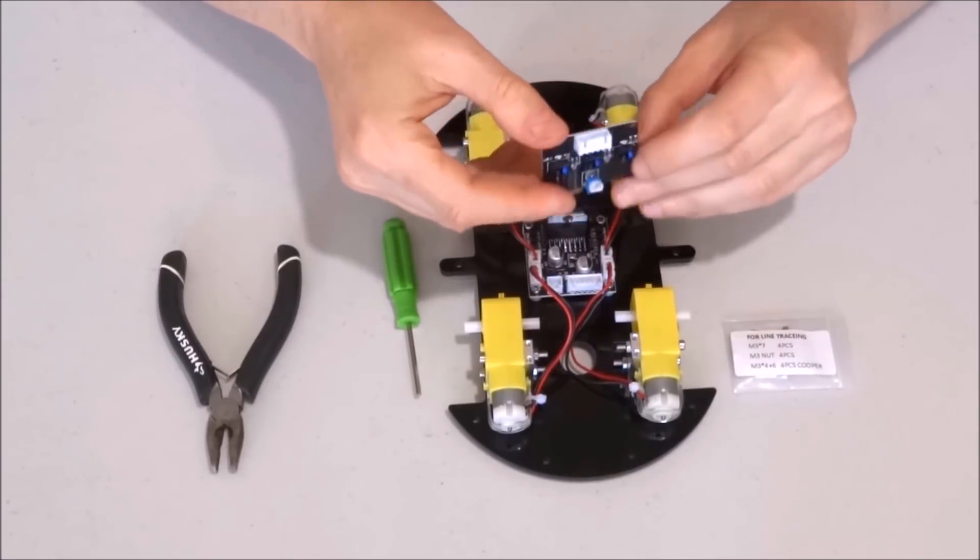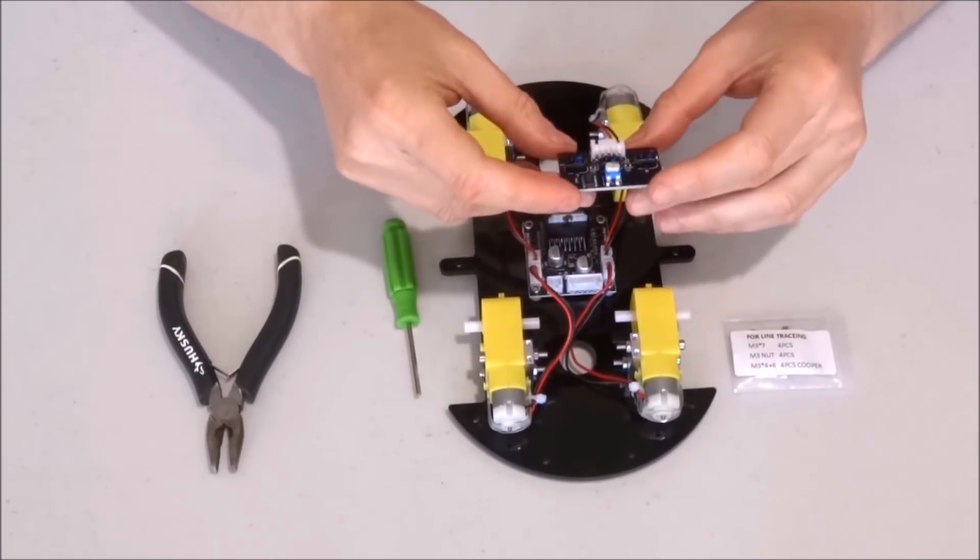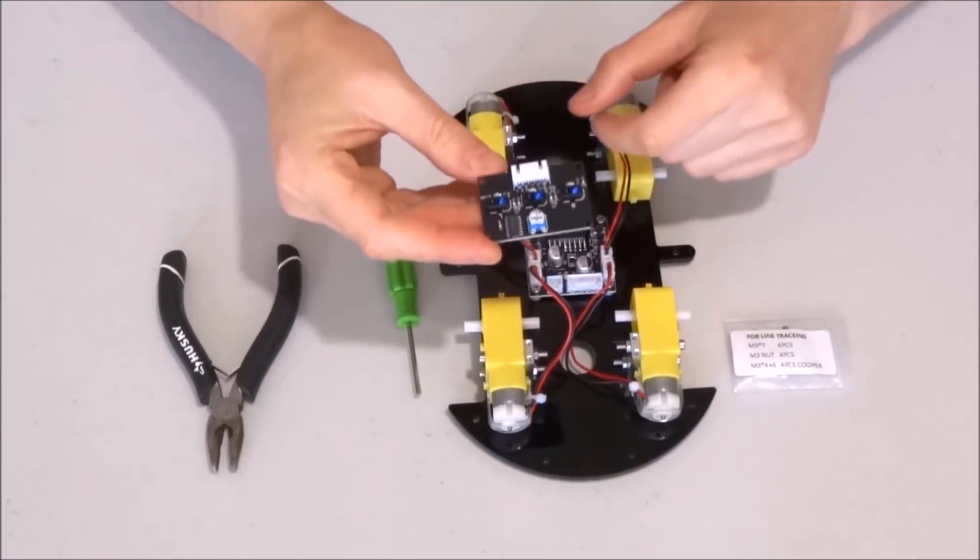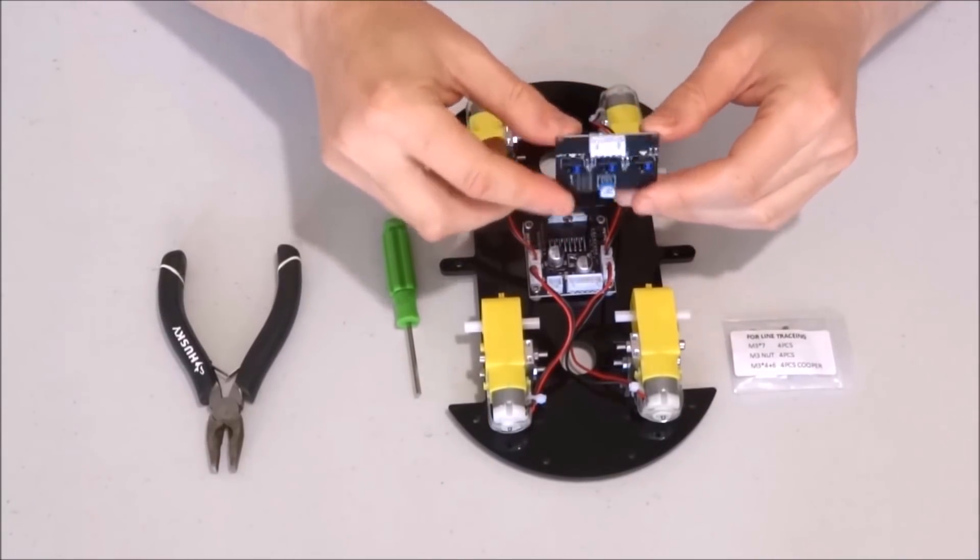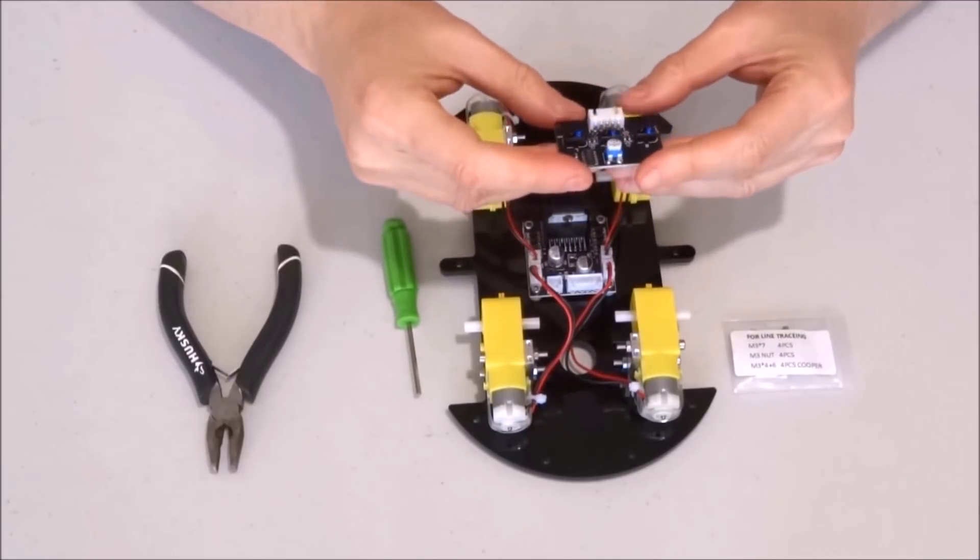As I mentioned earlier, in this version of the robot kit, instead of three separated line tracking sensors, there is only one board.